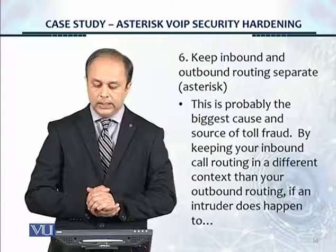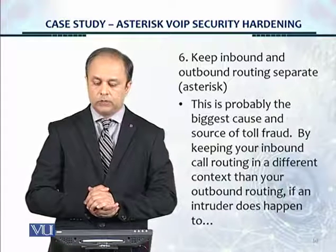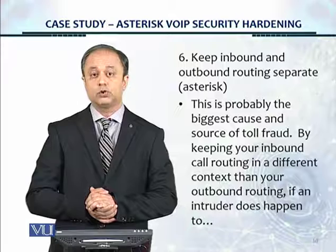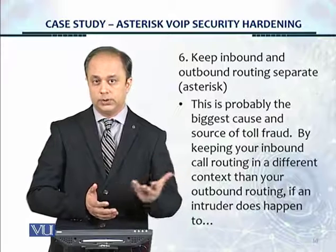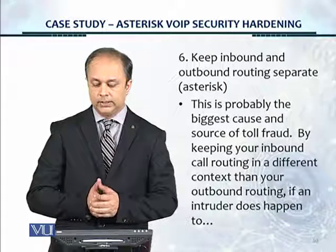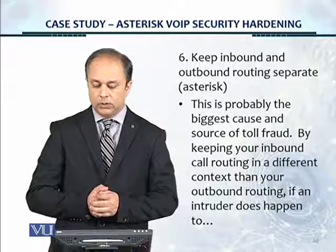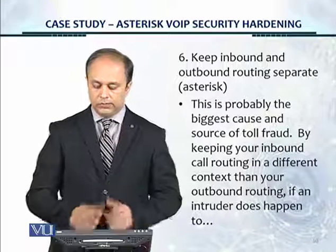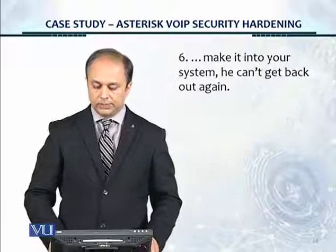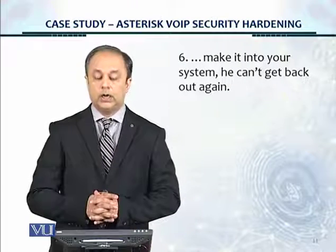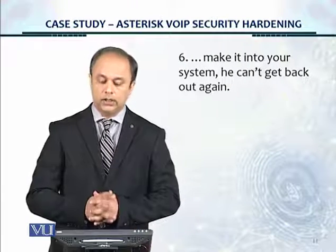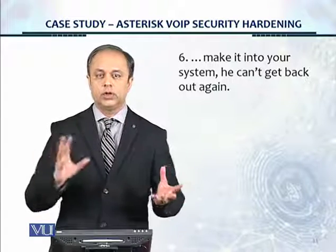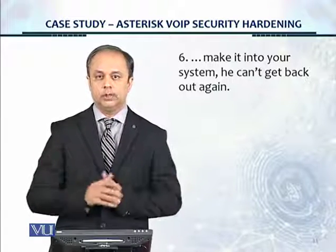Number six: keep inbound and outbound routing separate for Asterisk. This is probably the biggest cause and source of toll fraud — the typical pattern of how hackers attack. By keeping your inbound call routing in a different context than your outbound routing, if an intruder does happen to make it into your system, he can't get back out again. You should have different contexts and different instances for outbound calling and inbound calling.